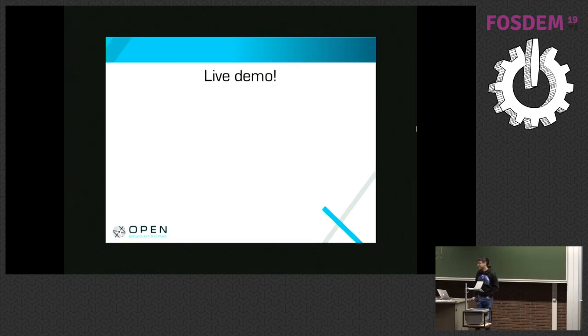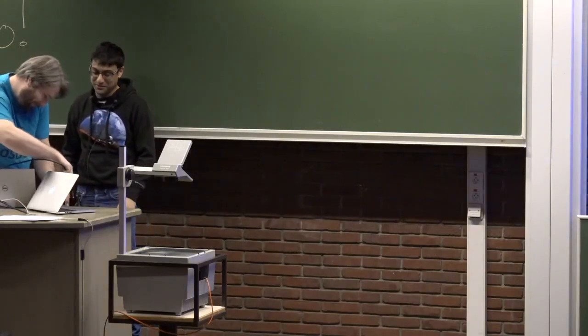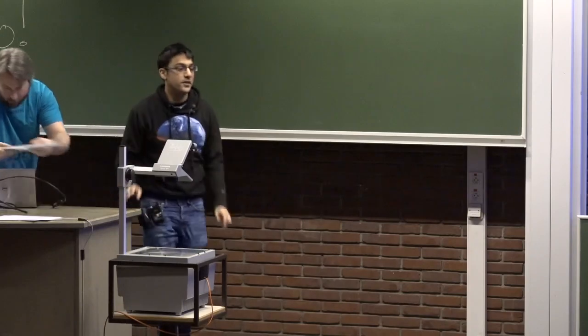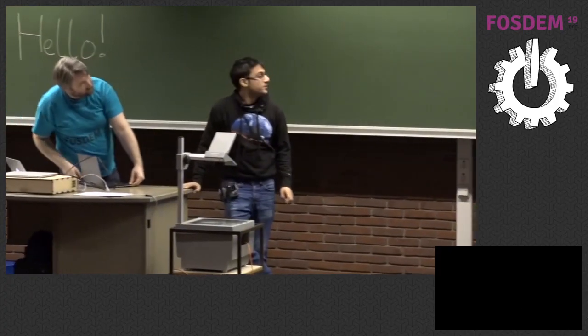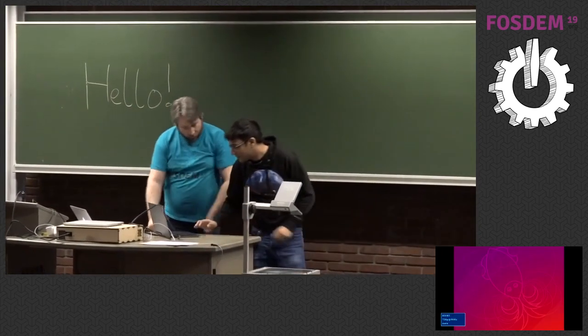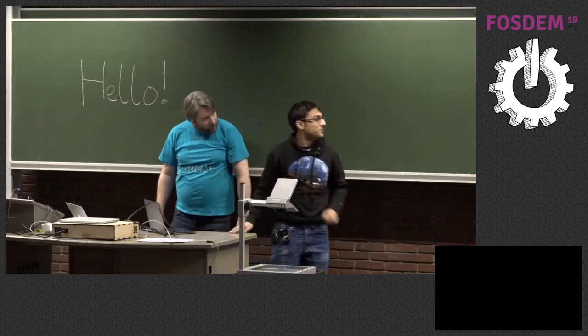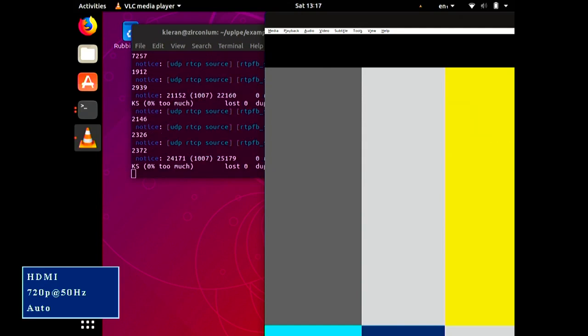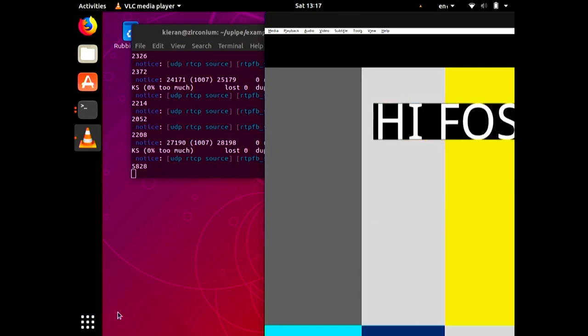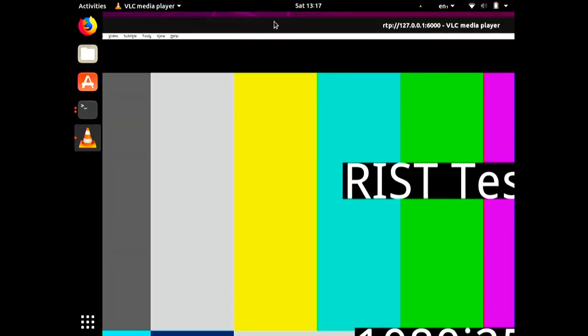Now the live demo — streaming over the FOSDEM Wi-Fi. We did cheat a bit using a VPN — WireGuard in this case — but we discovered during testing that a lot of VPNs can't handle pumping 50 megabits of UDP traffic through them. So the stream is at 10 megabits. You can see it is correcting packets as we speak.